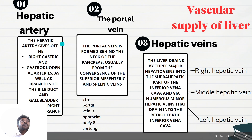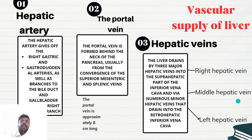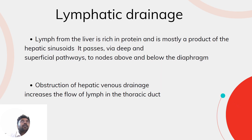The hepatic artery gives rise to the right gastric artery and gastroduodenal arteries. The portal vein is formed behind the neck of the pancreas. The liver drains three major hepatic veins into the suprahepatic portion of the inferior vena cava: the right hepatic vein, middle hepatic vein, and left hepatic vein.